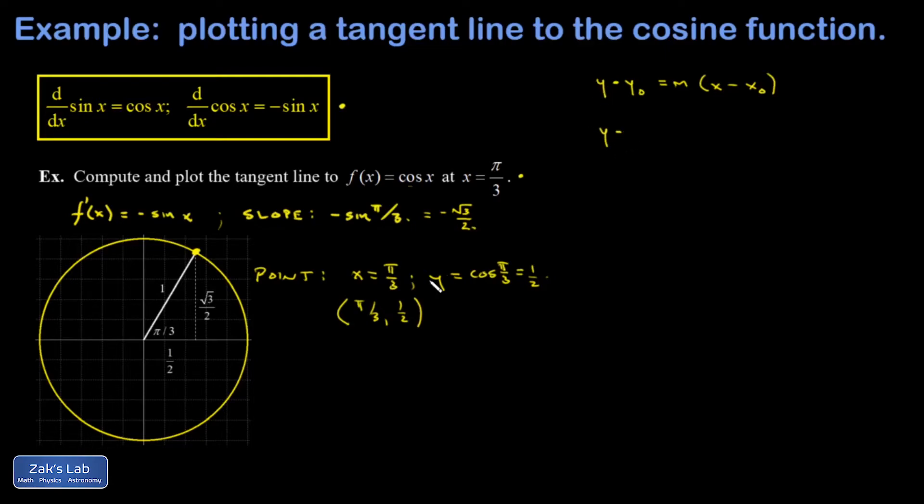So I have y minus the y value of my known points, y minus 1 half, equals slope, that's negative root 3 over 2, times x minus the x-coordinate of the known point, which was pi over 3.